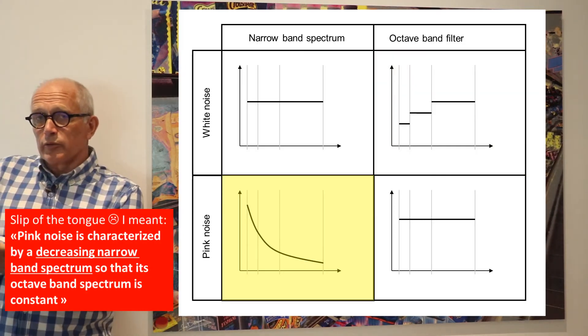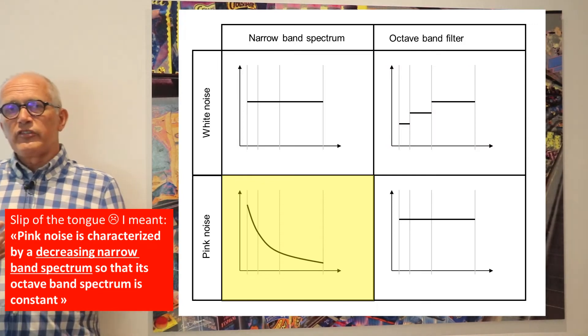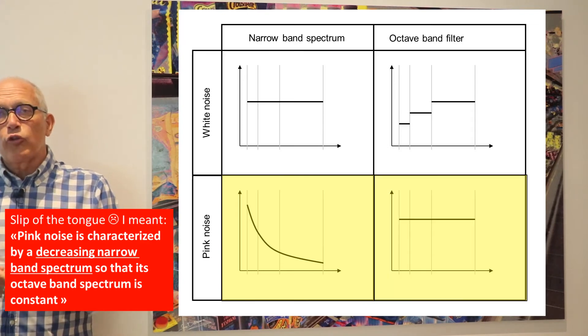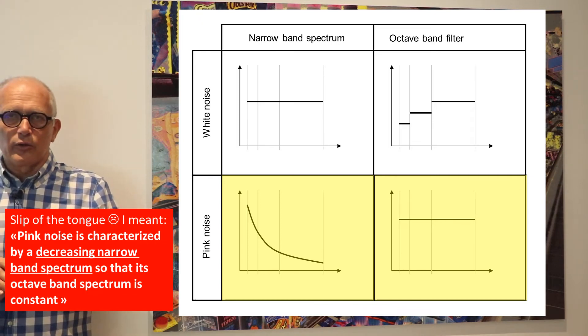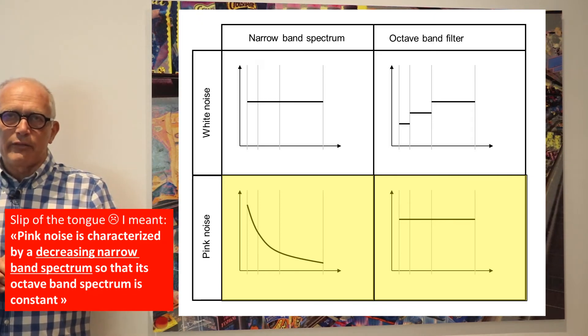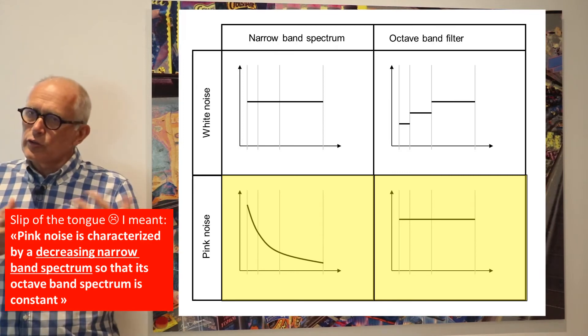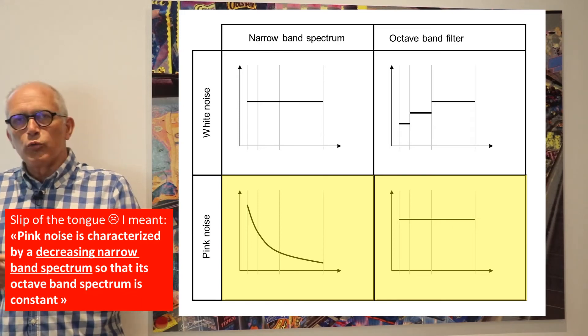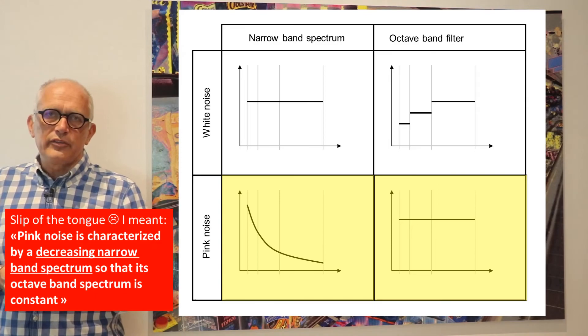The counterpart of that, the opposite of that, is the pink noise. The pink noise is designed with a decreasing octave band level, so that you have a constant octave band level. So these are two complementary noises and some standards request the test to be done with white noise or with pink noise, and it's important to know that definition.